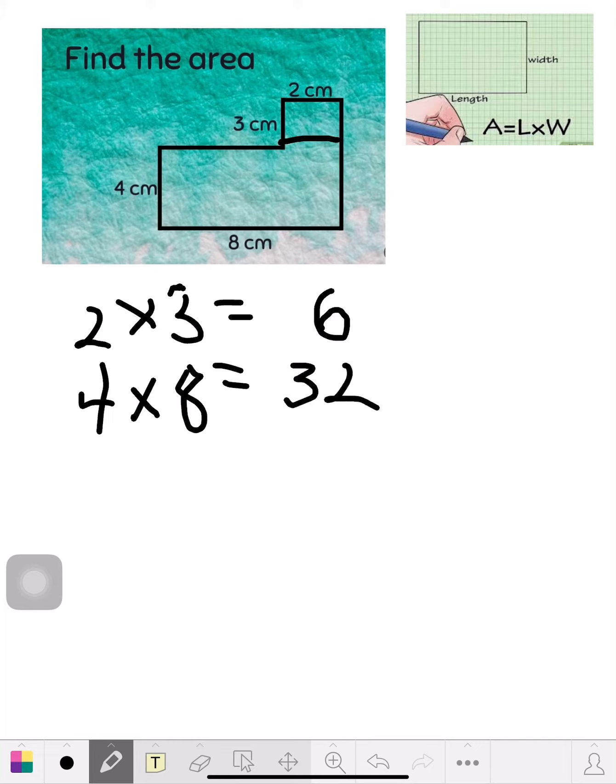So now you know the area of both those rectangles, so you add them together, you get 38. And truthfully that's the answer, it's 38. So what I do now is I square that off so the teacher knows my answer is 38.